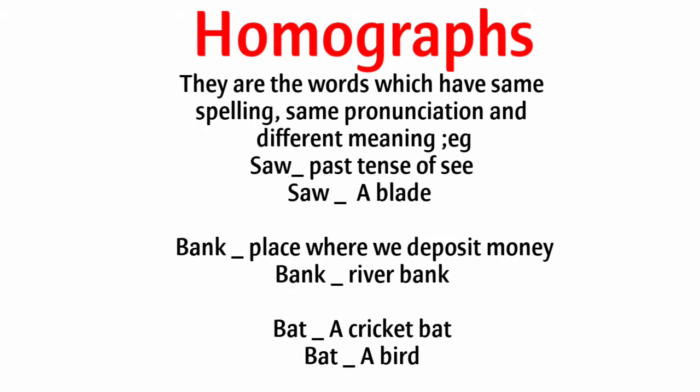Number two: homographs. They are the words which have the same spelling, same pronunciation, and different meaning. For example: saw — past tense of see; saw — a blade. Bank — a place where we deposit money; bank — a river bank. Bat — a cricket bat; bat — a bird.